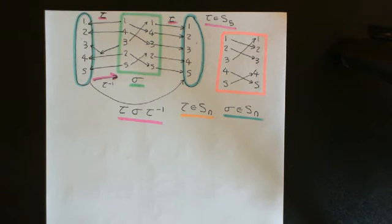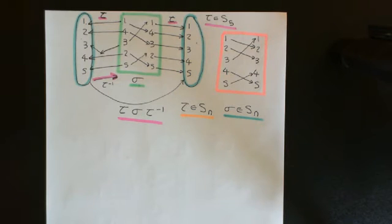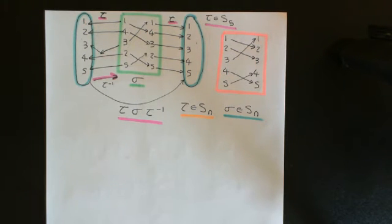Welcome back to this next video in which we are discussing conjugation in the symmetric group on the set of n elements. What we saw in the previous video is how you can interpret conjugation of an element in the symmetric group on the set of n elements by another element in the symmetric group on the set of n elements.